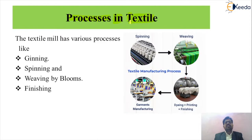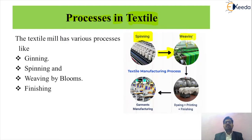As shown in the figure, the different types of processes used in the textile industry are as follows. The first process is called the spinning process, where we spin different types of cotton material. The output from spinning goes to the weaving process, where we weave the material obtained from spinning, and then we get the different types of finished products.